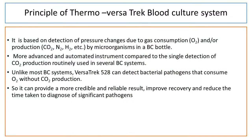The principle of the Thermo VersaTREK blood culture system is based on the detection of pressure changes due to gas consumption — O2 — and/or production — CO2, N2, H2, etc. — by microorganisms in a blood culture bottle. It is a more advanced and automated instrument compared to single detection of carbon dioxide production routinely used in several blood culture systems. Unlike most blood culture systems, the VersaTREK can detect bacterial pathogens that consume oxygen without CO2 production, providing more credible and reliable results, improving recovery, and reducing time taken to diagnose significant pathogens.